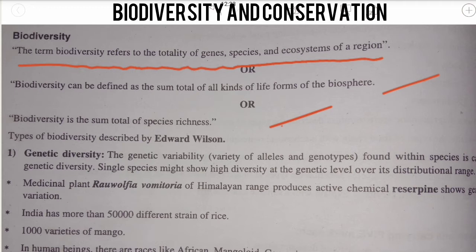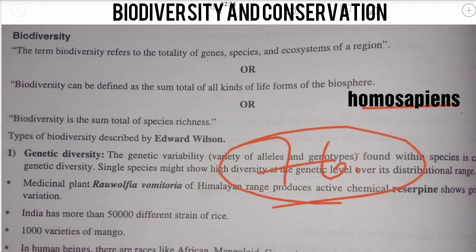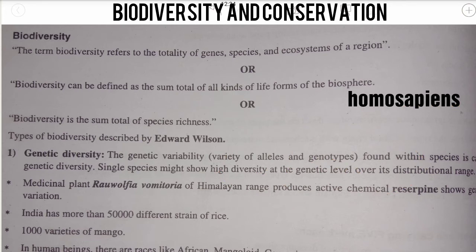We basically know that Homo sapiens is a species, so humans are part of a single species. When we talk about the number, there are more than seven billion humans belonging to the same species, Homo sapiens.